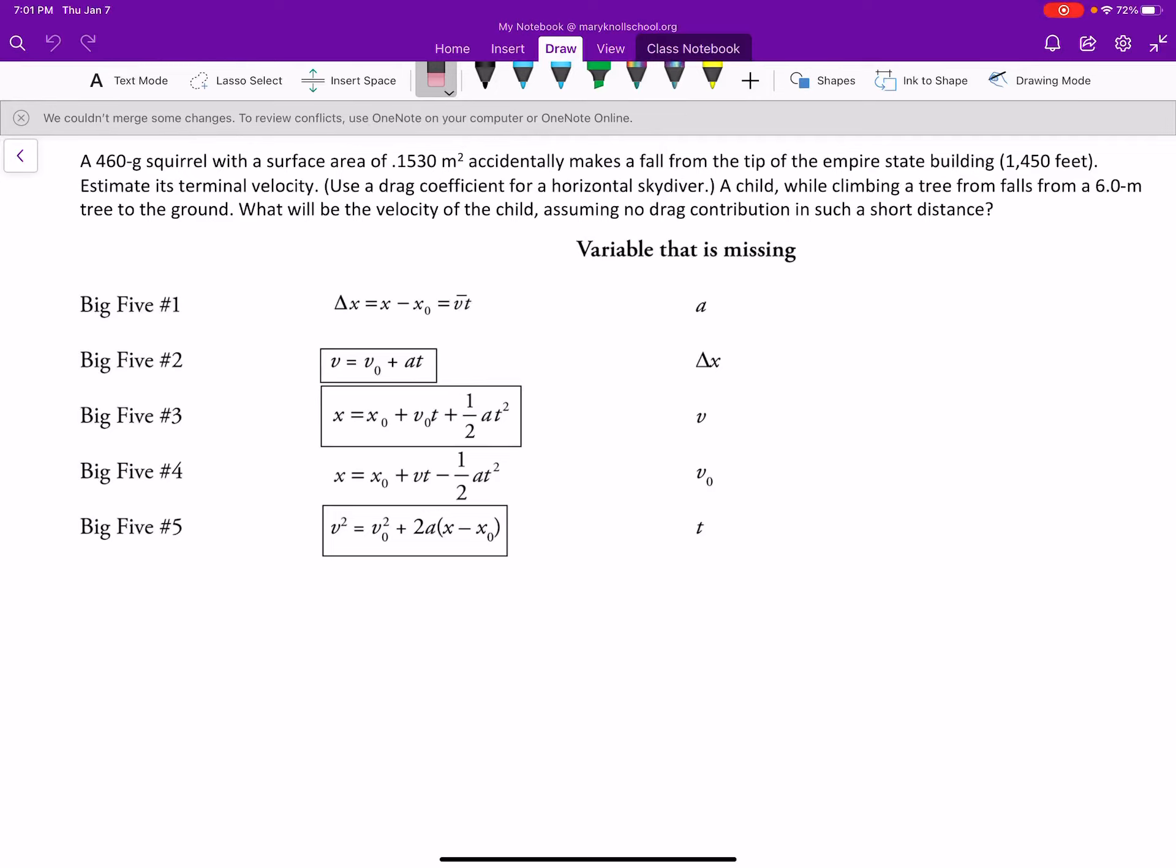Okay, a 460 gram squirrel with a surface area 0.1530 meter squared accidentally makes a fall from the tip of Empire State Building, which is 1,450 feet tall. Estimate its terminal velocity. Okay, so we're going to work on that one first.